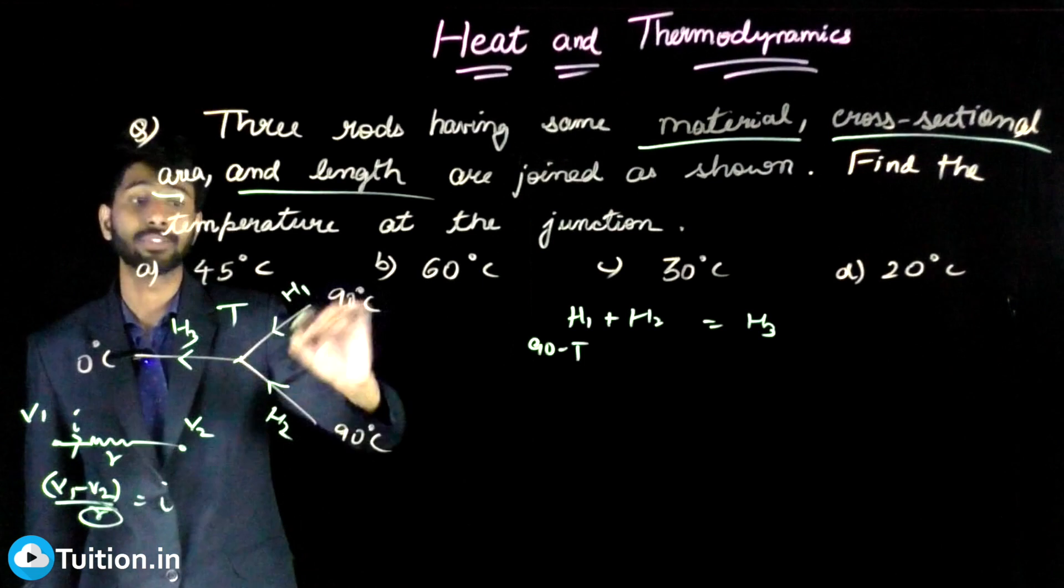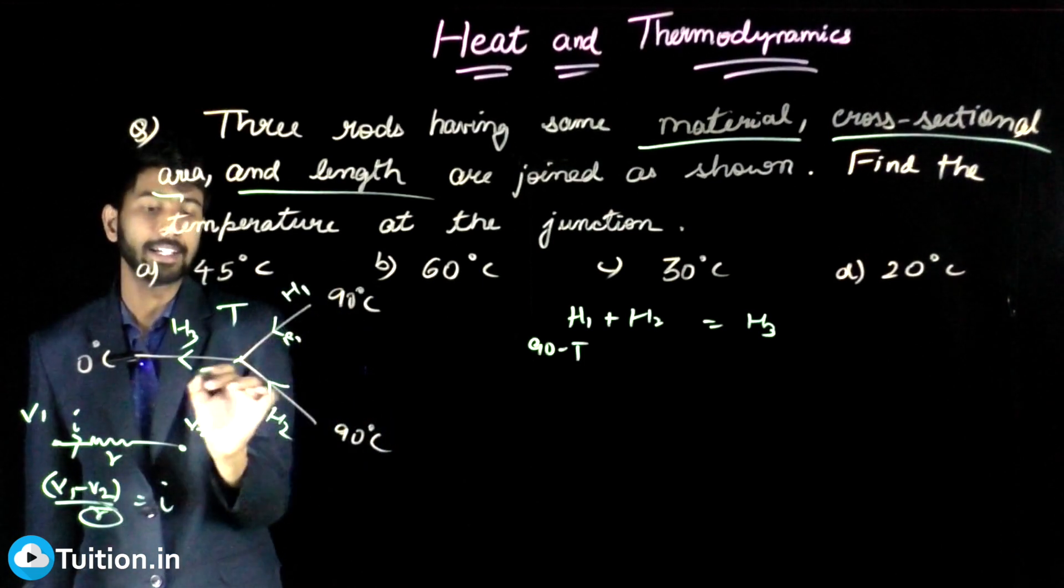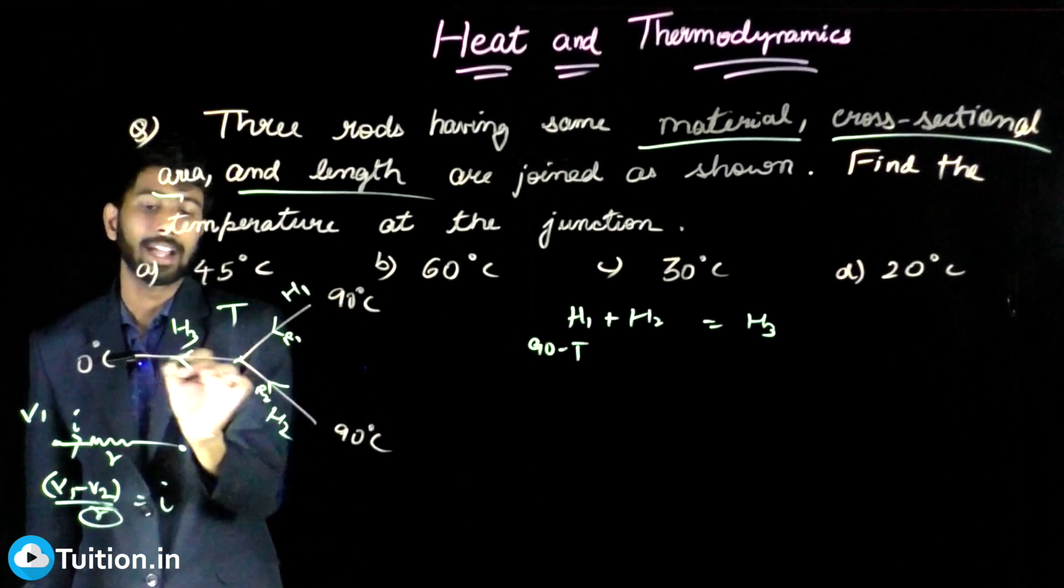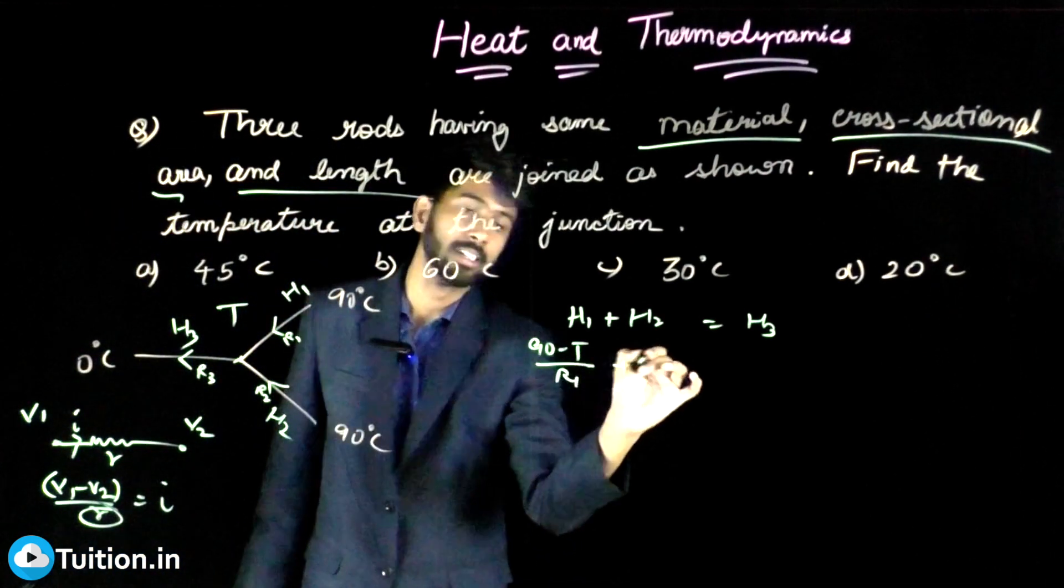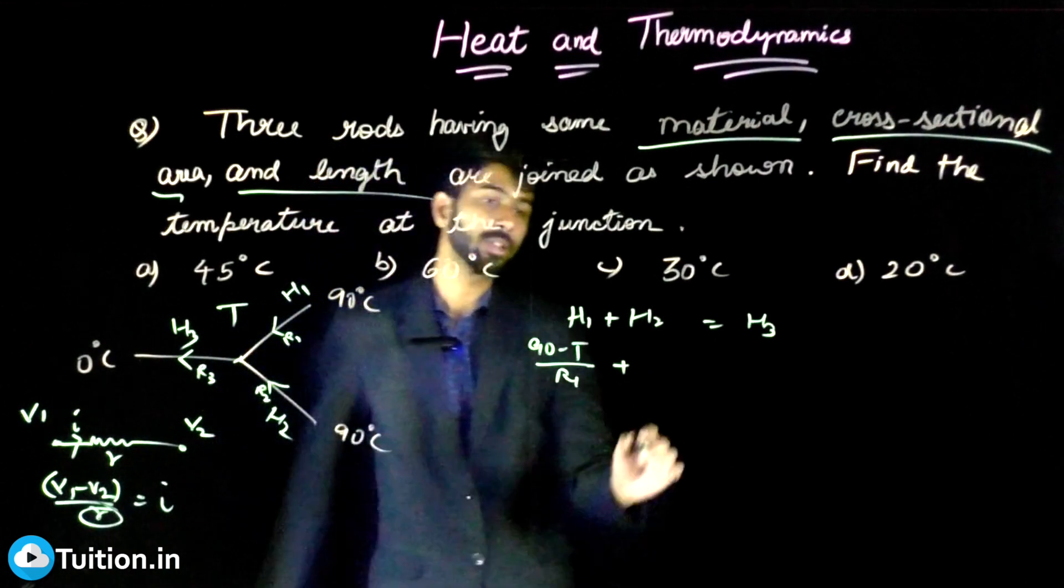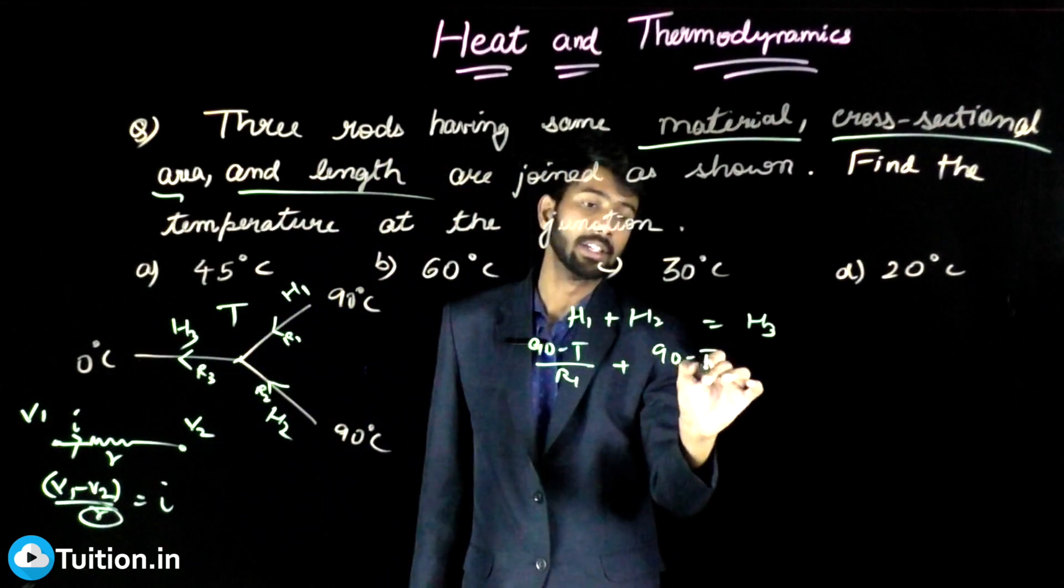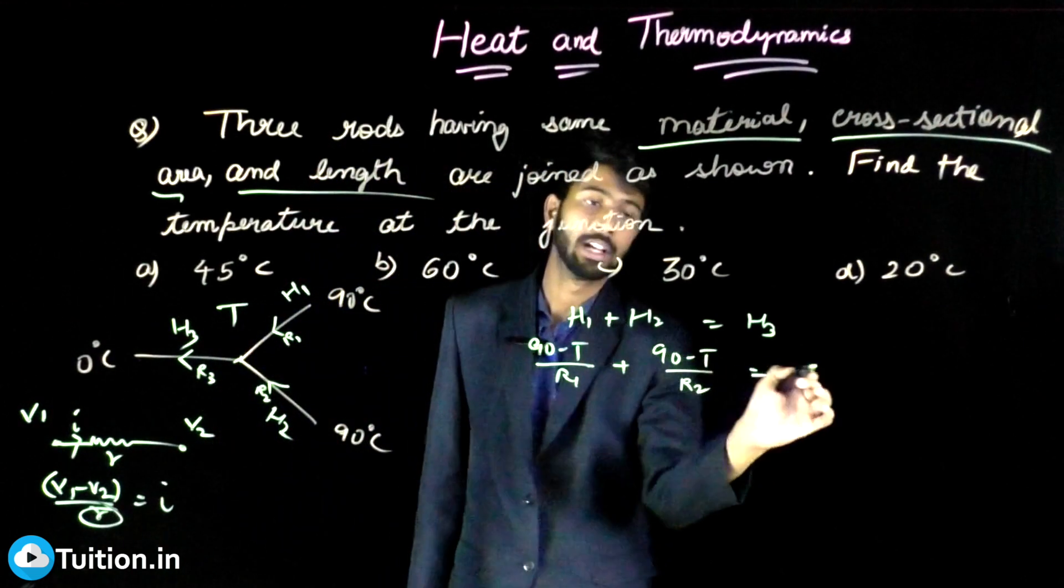The heat resistance of this rod be R1. Let the heat resistance of this rod be R2, and of this be R3. So this by R1, plus the same 90 minus T is present here also, so 90 minus T by R2, and H3 is nothing but the potential difference here, which is T minus 0 by R3.